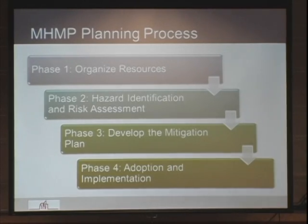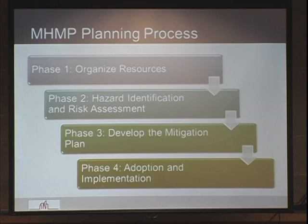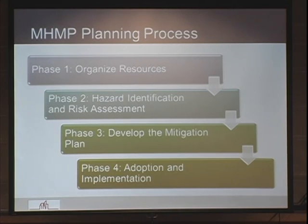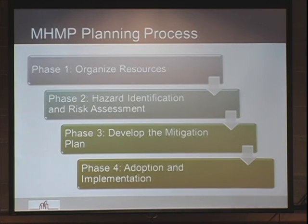The planning process can be broken down into four distinct phases. First phase: organize resources. Second phase: identify your hazards and do a risk assessment. Third phase: create some mitigation strategies and pull the plan together. And then finally, adopt it and implement it.